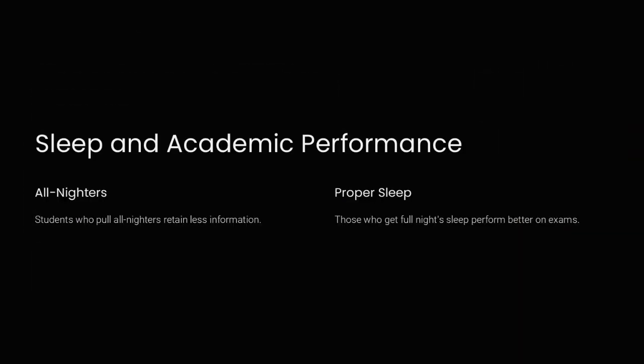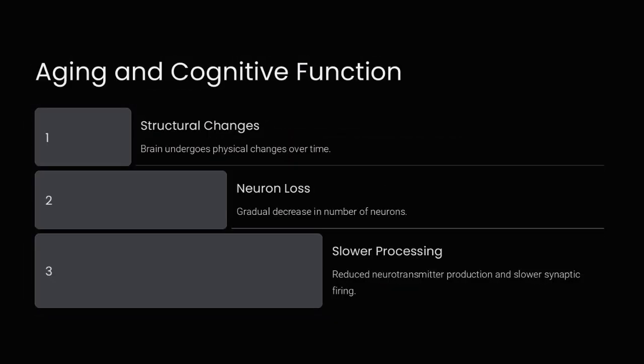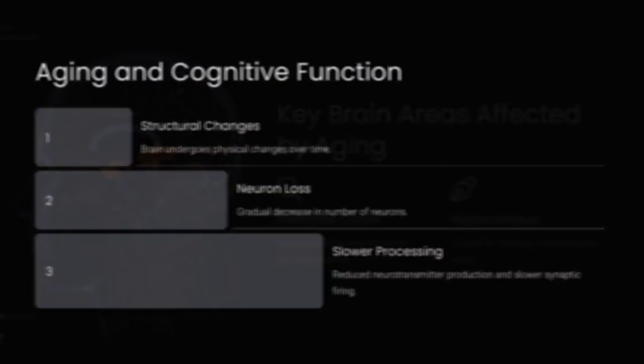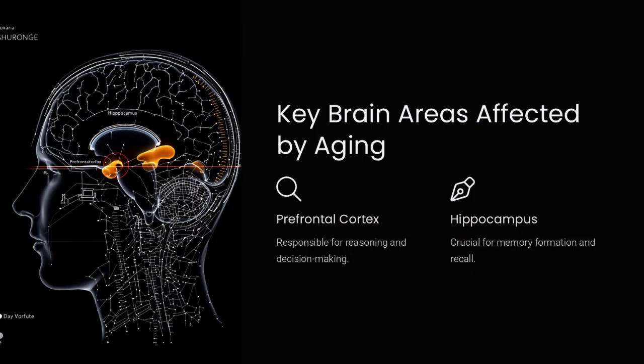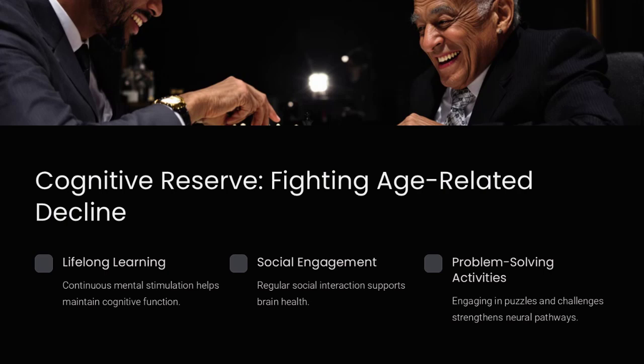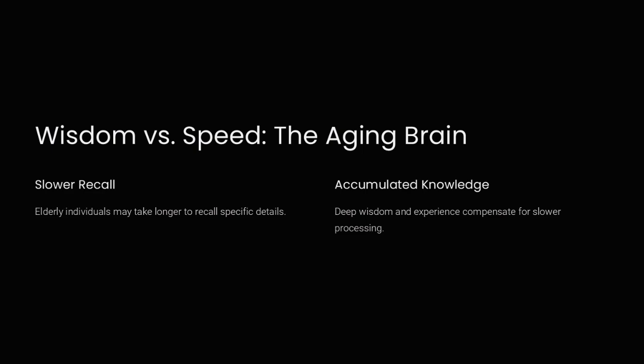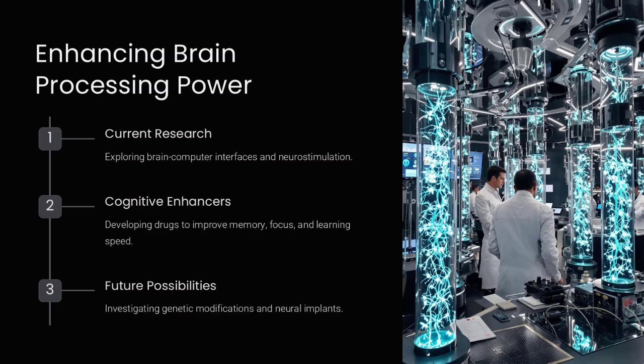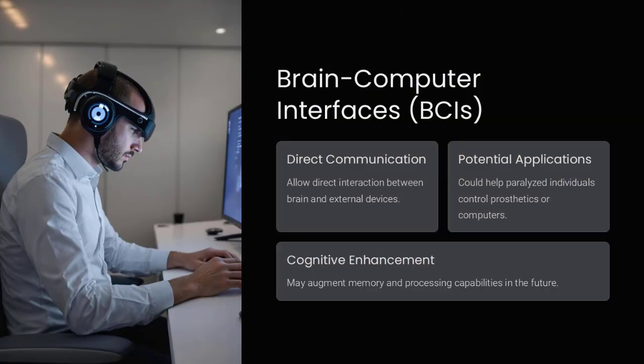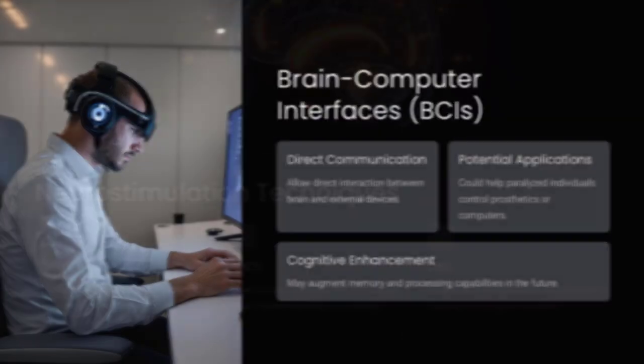Another fundamental limit is attention. The brain can process a vast amount of sensory data, but our conscious awareness is limited to about seven plus or minus two pieces of information at a time, a constraint known as Miller's law. This is why multitasking is inefficient. When we try to juggle multiple tasks, we are actually switching between them, which takes time and cognitive effort.